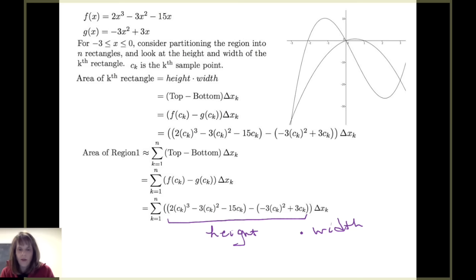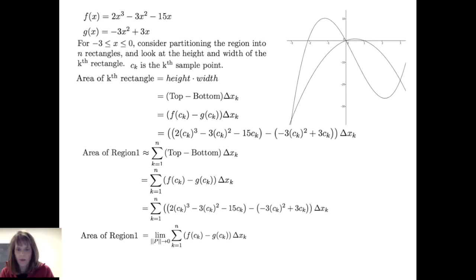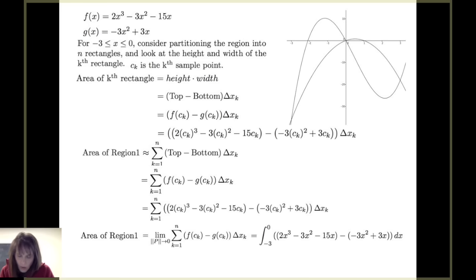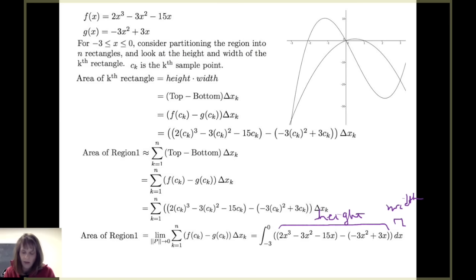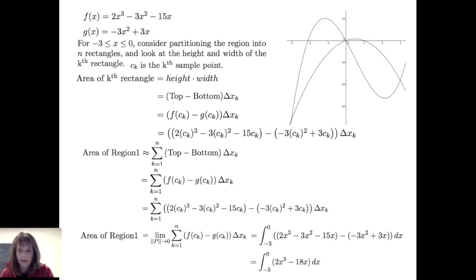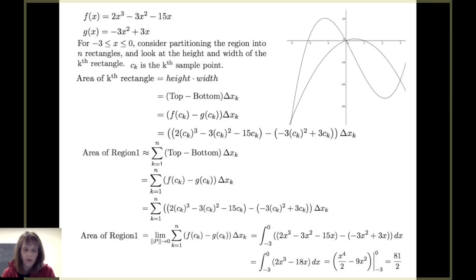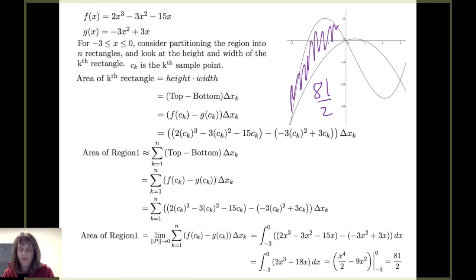As I take the limit as the norm of the partition goes to zero — that is, as the width of my longest sub-interval goes to zero — I get an infinite number of rectangles and I get the definite integral. The integral from negative 3 to 0 of 2x³ minus 3x² minus 15x minus the quantity (negative 3x² plus 3x) dx. Simplifying, I get the integral from negative 3 to 0 of 2x³ minus 18x dx, which gives a value of 81 halves. So the area of this left region is 81/2 square units.